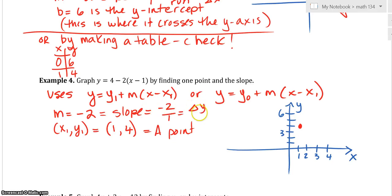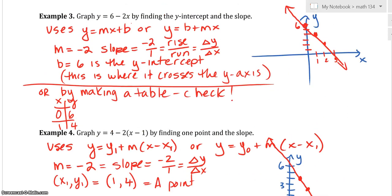this would be -2/1, the change in y over the change of x. So from that point, we can go down 2 over 1.